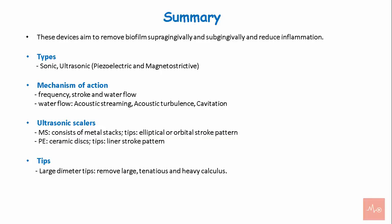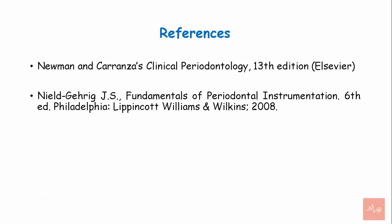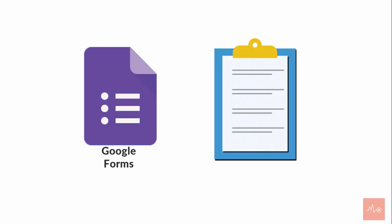Ultrasonic tips can have larger or thin diameter designs. Larger diameter tips are used to remove large, tenacious, and heavy calculus, while thinner diameter tips are used to remove plaque biofilm from root surfaces. Ultrasonic instruments are used with a pen grasp and light pressure, with deposits removed from coronal to apical.